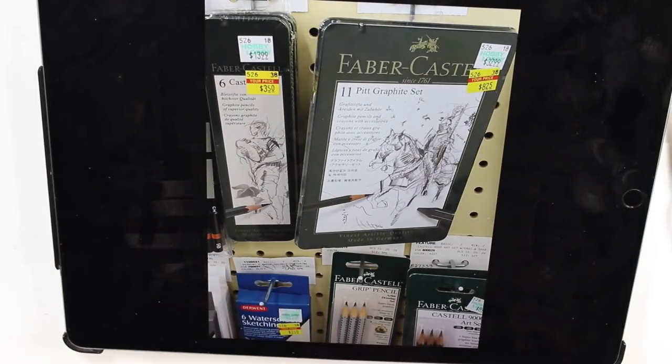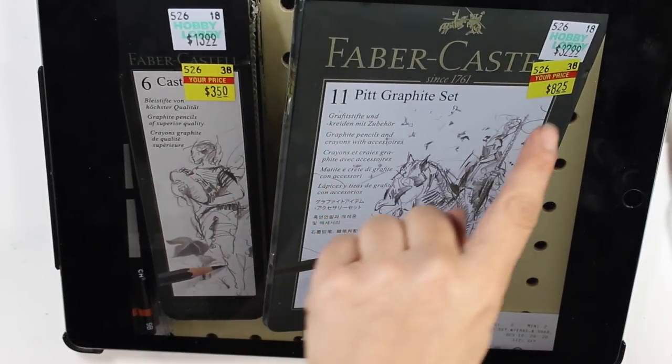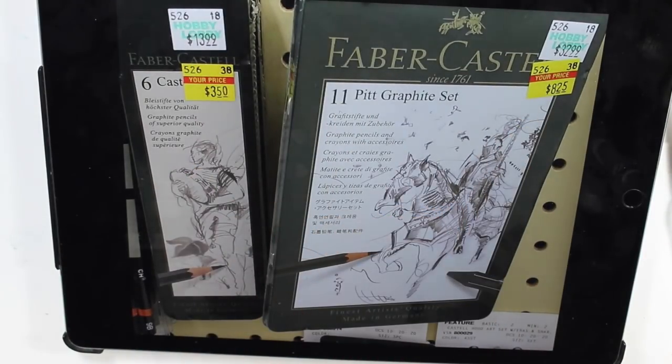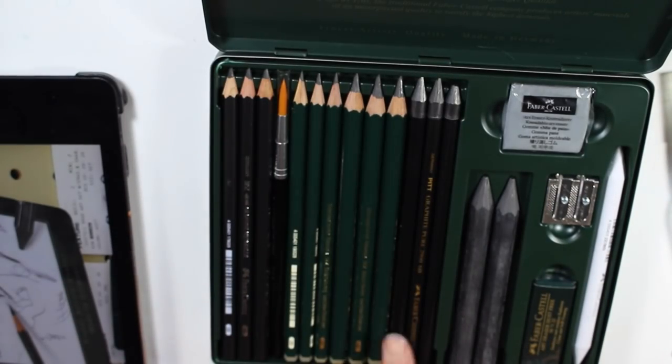Moving on, then they had, a lot of their pencil sets. Derwent, all these. This Faber-Castell, this is an 11 piece graphite set, Pitt graphite set for $8.25. I actually picked up last month, a while back, I picked up this one for actually seven. I think this was like $7. And this is a 19 set, but I really liked this set. I love this.